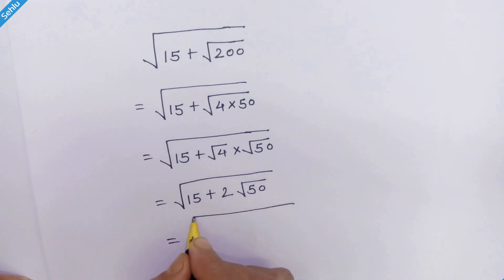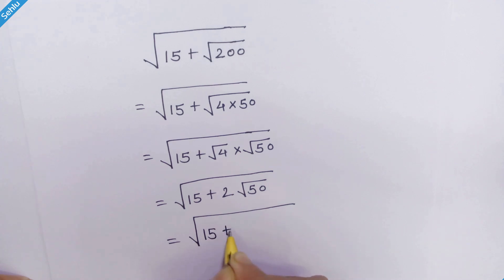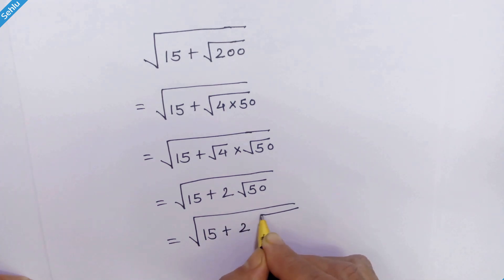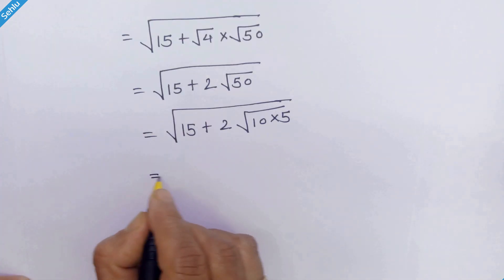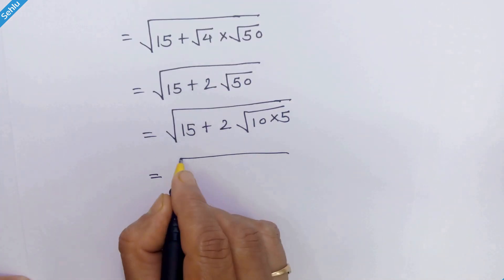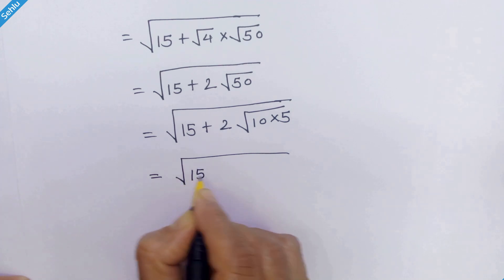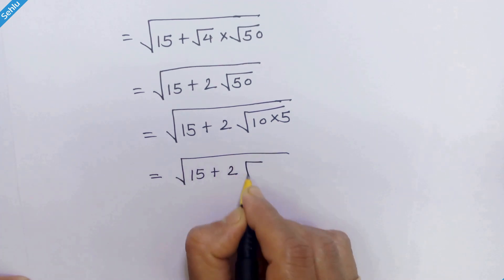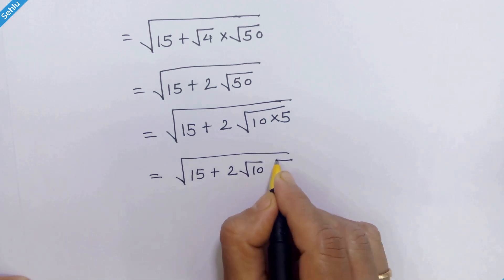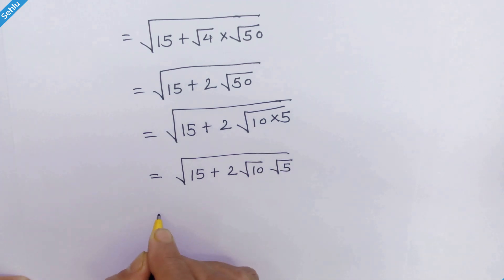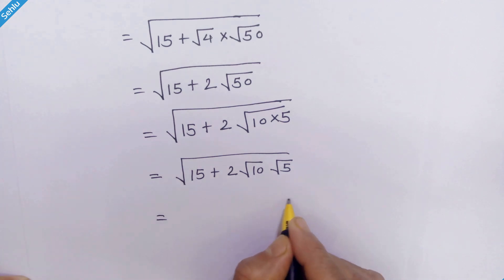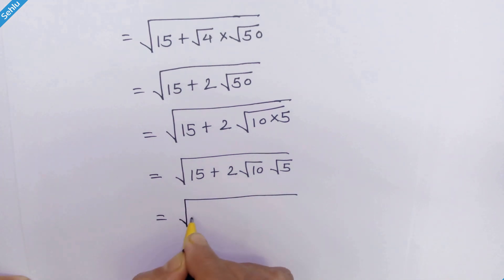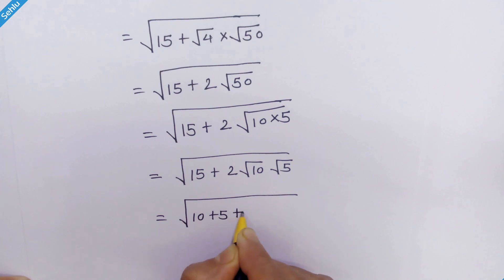Now 50 can be written as 10 times 5, so we have square root of 15 plus 2 times square root of 10 times square root of 5. Now let's focus on 15. 15 can be written as 10 plus 5, so we write square root of 10 plus 5.